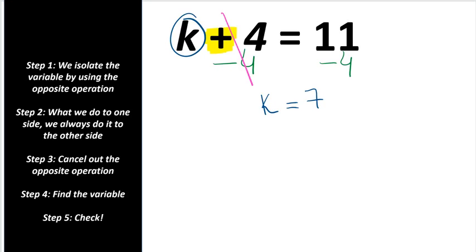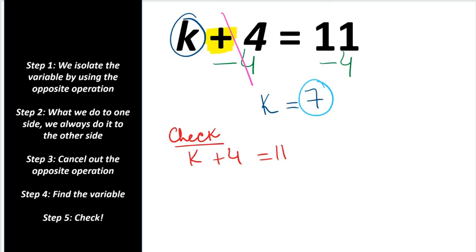Let's check our work. Copy down the equation and substitute 7: we have 7 plus 4 equals 11. The right side equals the left side — give yourself a check mark.